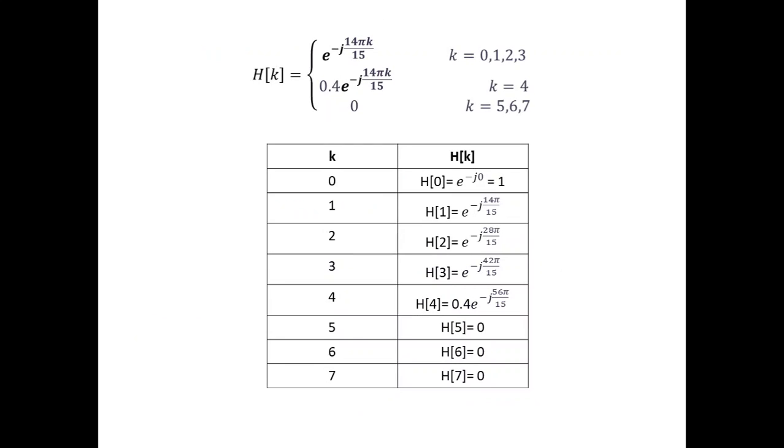Based on this h of k we need to identify these values of h of k which are needed in our next calculations. For each value of k, for k equal to 0 we just substitute over here and find the h of 0, for k equal to 1 we find h of 1, for k equal to 2, k equal to 3, 4, 5, 6 and 7. We have just obtained the values of h of k which will be useful in calculating our h of n.